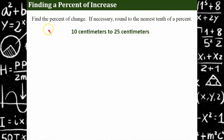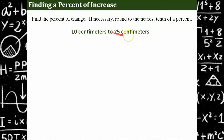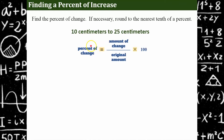I'm going to model an example. We're going to find the percent of change, rounding to the nearest tenth of a percent if necessary. We have a measurement here: 10 centimeters to 25 centimeters. Let's say we have a snake — we measured it and it was 10 centimeters, then the next time we measured it, it's 25 centimeters. So we have a new amount and an old amount. Let's apply the formula and find what percent this changed by.